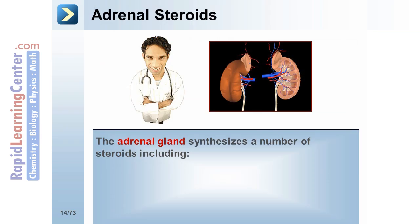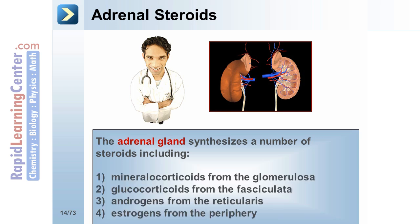The adrenal gland synthesizes a number of steroids, including mineralocorticoids from the glomerulosa, glucocorticoids from the fasciculata, androgens from the reticularis, and estrogens from the periphery.